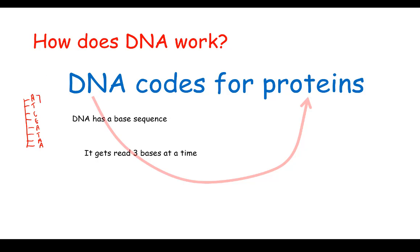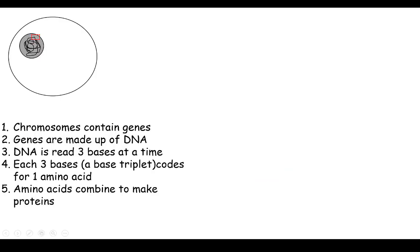It gets read three bases at a time. So the first three are A, T, and C. The next three are G, A, T. Three bases codes for one amino acid, and lots of amino acids are bonded together to form a protein. So that's how DNA works.